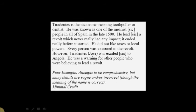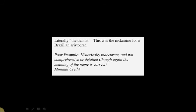This, on the other hand, is a poor example. It says: 'Tiradentes is the nickname meaning tooth puller or dentist.' That's literally correct. 'He was known as one of the meanest people in all of Spain in the late 1500. He led a revolt which never really had any impact. It ended really before it started. He did not like taxes or local powers. Every person was executed in the revolt. However, Tiradentes was exiled to Angola. He was a warning for other people who were believing to lead a revolt.' You can see they try to be comprehensive but many details are vague and incorrect, though they do get the meaning of the name correct. You get the sense the student recognizes the name but can't put it in any accurate context.